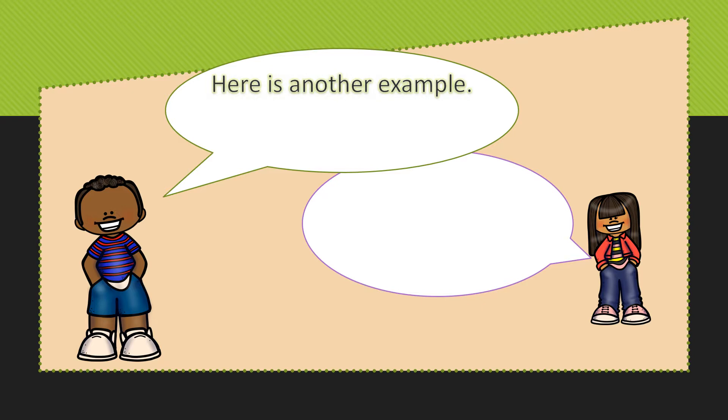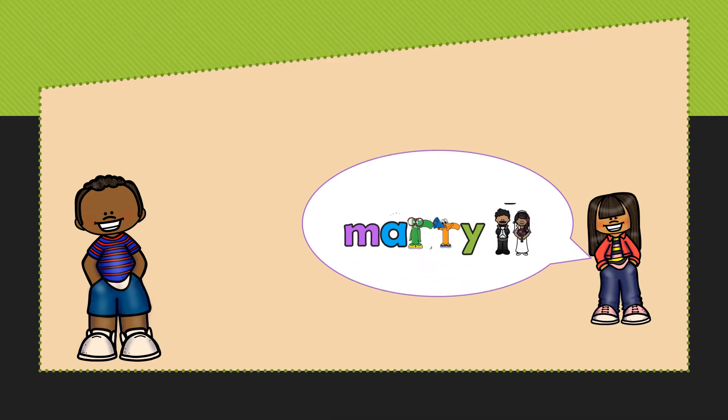Here's another example. We have this word right here where the two Rs are controlling each other. So in the word marry, the two Rs are controlling each other and the A can say its short sound again. Ah. Marry.